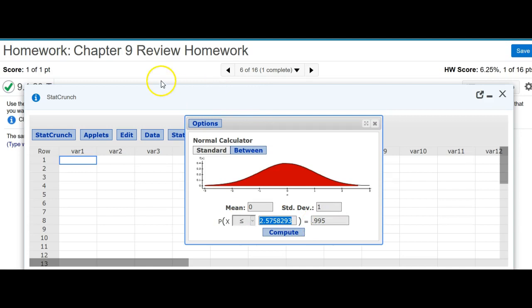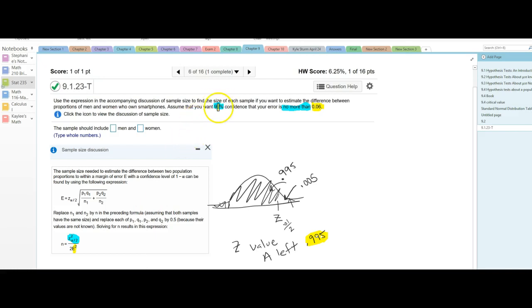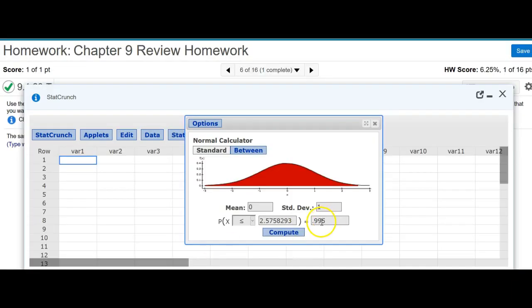Now this would be different if you're looking at a different problem here. If it was like 95%, your alpha would be 0.05 divided by 2, and then you'd be finding a different value here. So 0.995 is what we're finding in this case, and so this gives me that Z value.